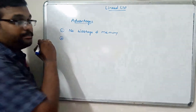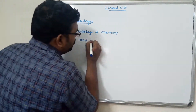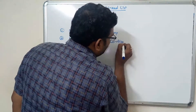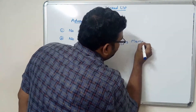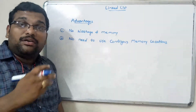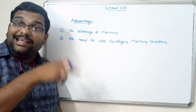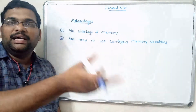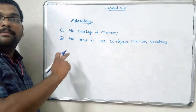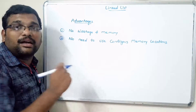The second advantage is there is no need to use contiguous memory locations. We need not allocate contiguous memory for all elements because every node holds a link to the address of the next node. So we can store the elements anywhere in memory, as long as we provide the address in the current node.